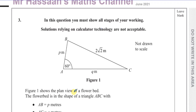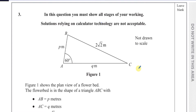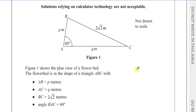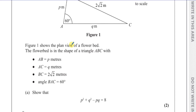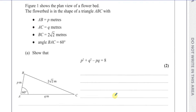This question is about trigonometry. It says figure one shows a planned view of a flower bed. The flower bed is in the shape of a triangle ABC, where AB is P meters, AC is Q meters, BC is 2 root 2 meters, and angle BAC is 60 degrees. We've got to show that P squared plus Q squared minus PQ equals 8.